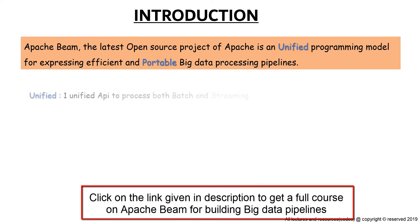But in Beam we have one unified API to process both these two types of data. We don't have separate APIs for them; rather we use one unified API to do all types of processing. So while you are building a Beam pipeline, you are not much concerned about what type of pipeline you are building. Whether it's a batch pipeline or streaming pipeline, it doesn't matter at all. Only the data matters.